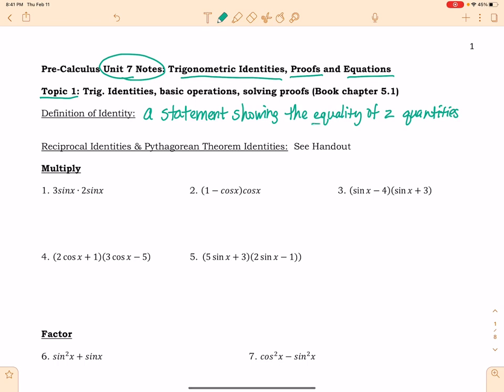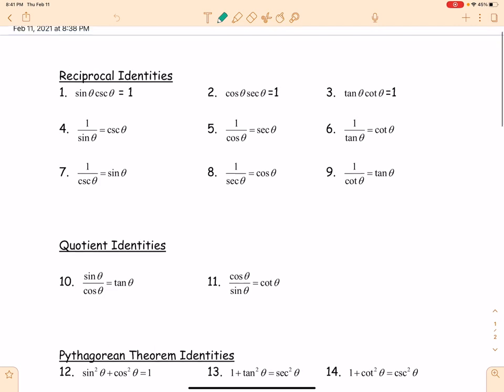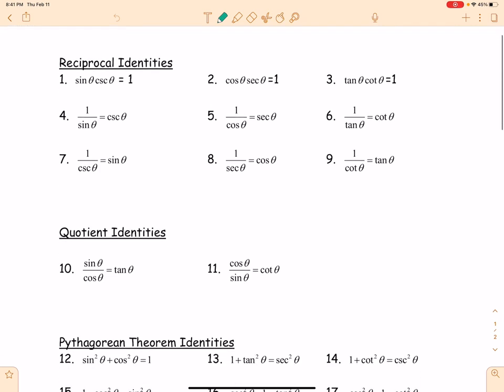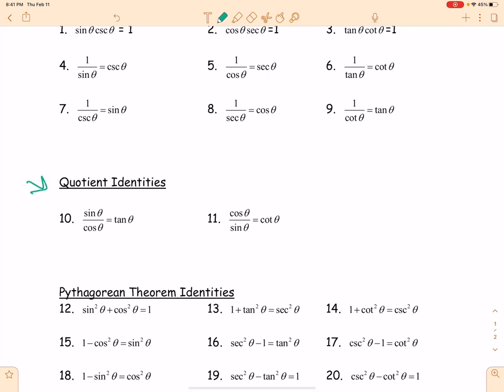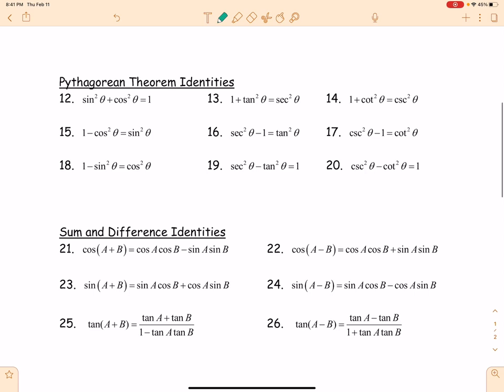It is a statement showing the equality of two quantities. So we've already talked about some of our identities, but I want to show you the identities page that we're going to be using. The reciprocal identities we've already used in other lessons, and we've also used the quotient identities down here. But the new ones that we're going to be using are the Pythagorean theorem identities. Here they are right here.